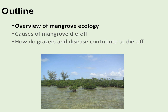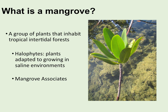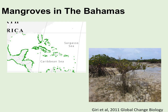To get started: what is the mangrove? It's a group of plants that inhabit tropical intertidal forests, and those plants are halophytes, meaning that they can tolerate living in a saline environment. In the Bahamas we have multiple species — red, white, and black mangrove — in addition to the buttonwood.